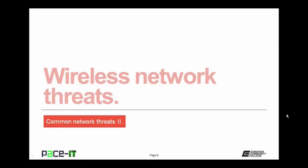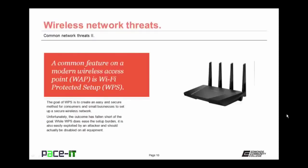It's time to move on to wireless network threats. Our first topic is an unintended threat. A common feature on modern wireless access points is Wi-Fi Protected Setup, or WPS. The goal of WPS is to create an easy and secure method for consumers and small businesses to set up a secure wireless network. Unfortunately, the outcome has fallen short of the goal. While WPS does ease the setup burden, it is also easily exploited by an attacker and should actually be disabled on all equipment. This exploit has been known for a couple of years, and yet equipment manufacturers continue enabling WPS by default on their equipment.